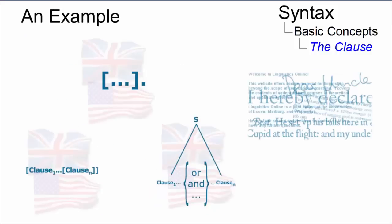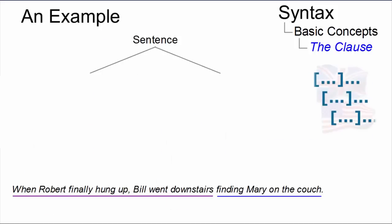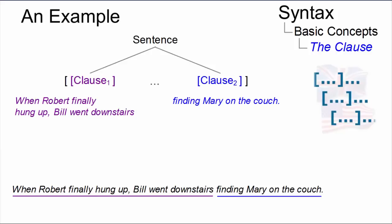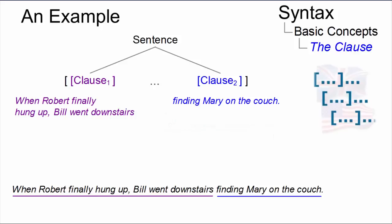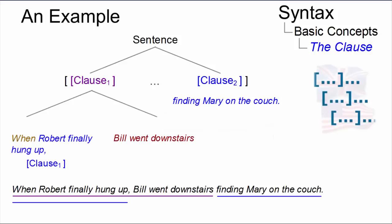In many cases, especially in written English, multiple sentences often combine coordinate and subordinate structures. In 'when Robert finally hung up, Bill went downstairs finding Mary on the couch,' we have a multiple declarative sentence. It exhibits two clauses in a compound relationship without an overt coordinator, where clause two is an elliptical non-finite clause. The missing element is Bill. Clause one is a complex sentence with an adverbial subordinate clause of time, signalled by the initial subordinating conjunction 'when,' and a finite main clause.